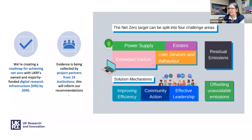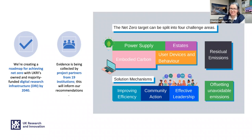The report has been brought together by evidence collected from our project partners across 19 institutions and from the literature. There are various challenges we've noticed, from power supply to consideration of carbon embodied in the development of equipment we use, and solutions to this are really going to rely on community action, effective leadership, and how we improve efficiency.